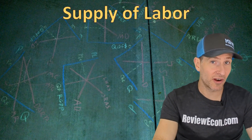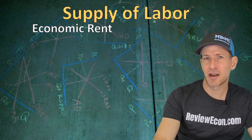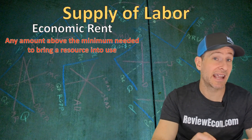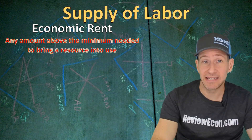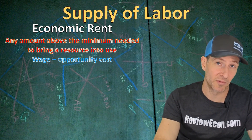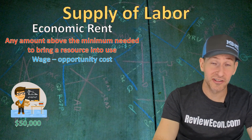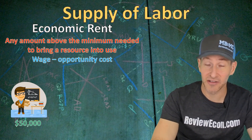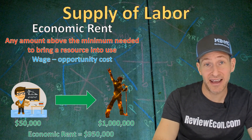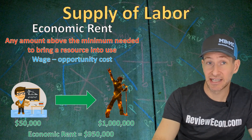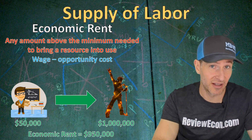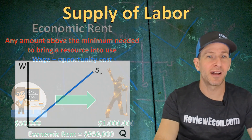One key term in regards to the buying and selling of resources is economic rent. Economic rent is like economic profit or producer surplus — it's any amount above the minimum needed to bring a resource into use, essentially the wage minus the opportunity cost of a particular worker. For example, if a teacher earning $50,000 quits to become a rock star earning a million dollars a year, that former teacher will have $950,000 worth of economic rent, since they needed more than $50,000 to quit teaching and make that switch.